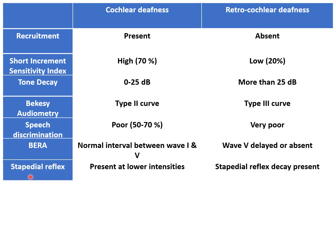The stapedial reflex is present at lower intensities in cochlear deafness because the patient is recruiting — meaning they are more sensitive to even lower intensity sounds, so this reflex is triggered at lower intensities. In retro-cochlear pathology, stapedial reflex decay is present, meaning that over a period of time the reflex amplitude falls to 50% due to auditory or nerve fatigue.